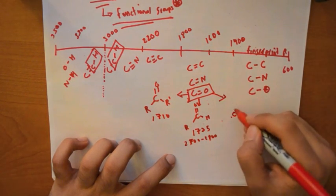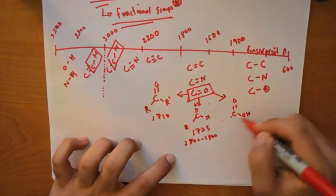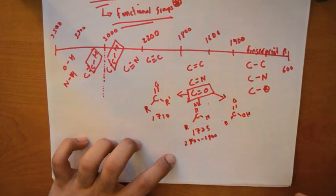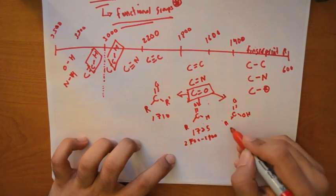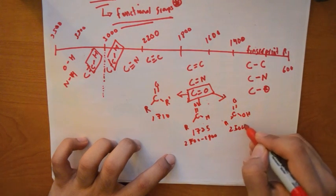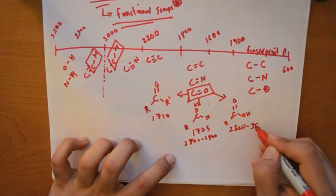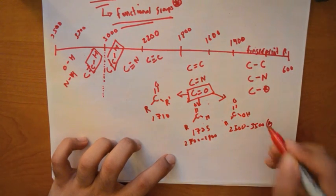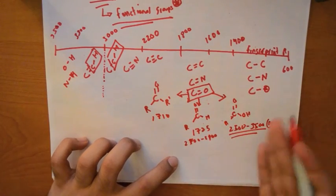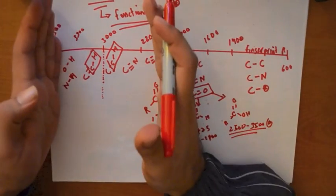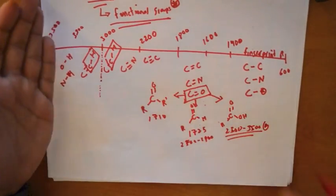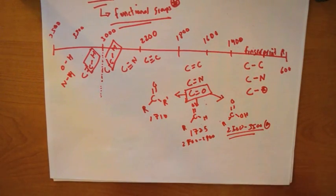Another one is an acid. Acids are very easily, you can tell where they are because they technically cover most of your IR, because they go from 2500 to 3500. It's a broad peak. So if you see a very broad peak that's covering almost this much of your IR, you know that there is an acid group in your molecule.